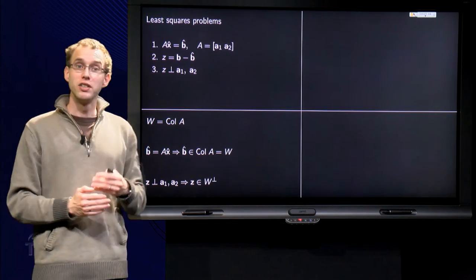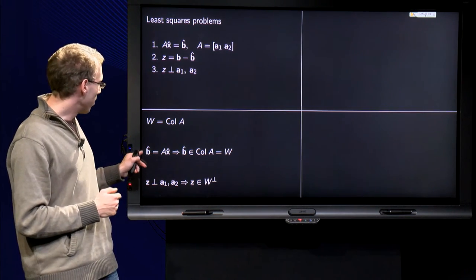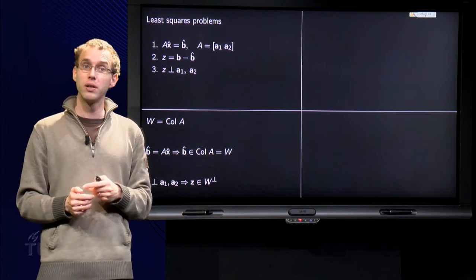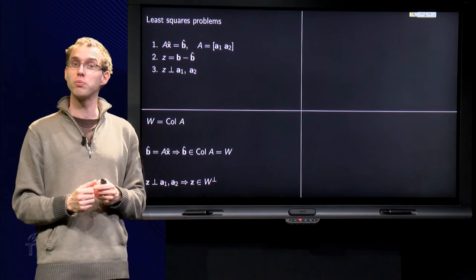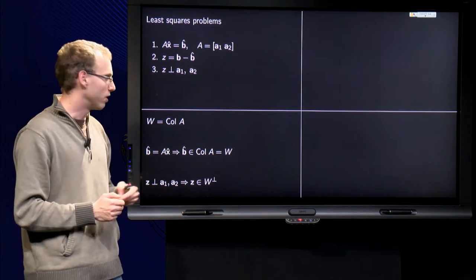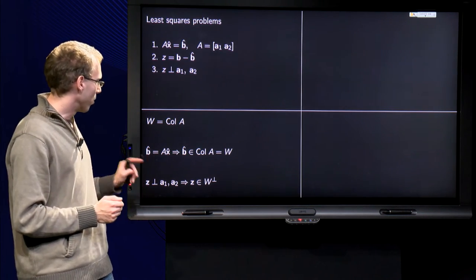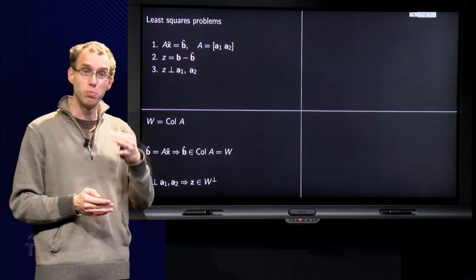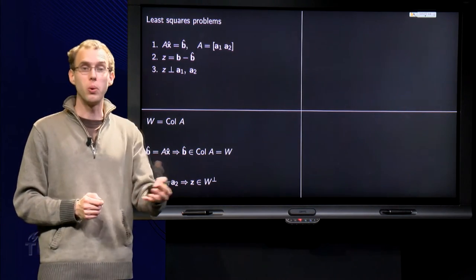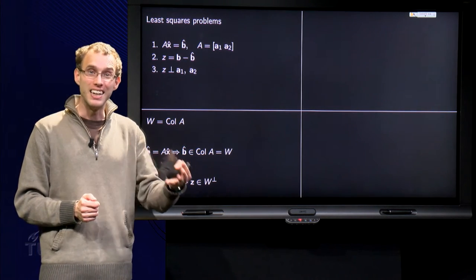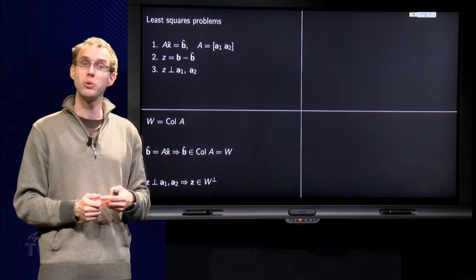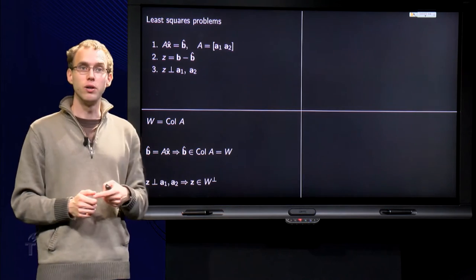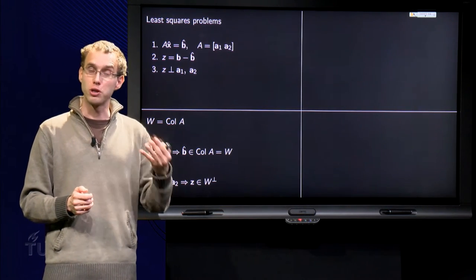Let us write W equals the column space of A. Then we know since B hat equals A times x hat that B hat is in the column space of A, since the linear combination of the columns of A equals W. Furthermore, if we demand z to be orthogonal to both A1 and A2, we know that z is orthogonal to any linear combination of A1 and A2, which means that z is orthogonal to W, which means that z is in W perp, z is in the orthogonal of W.